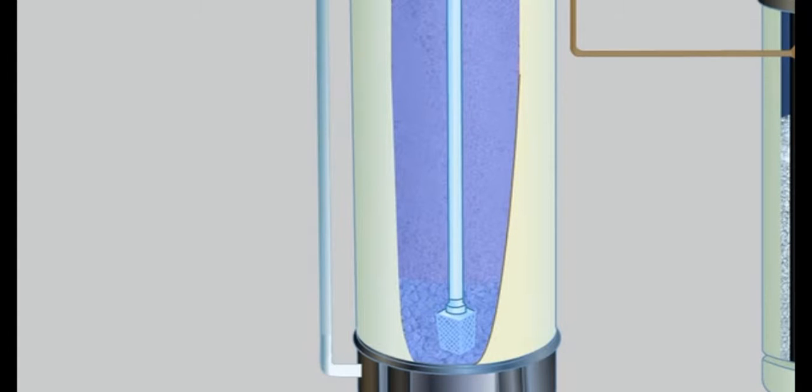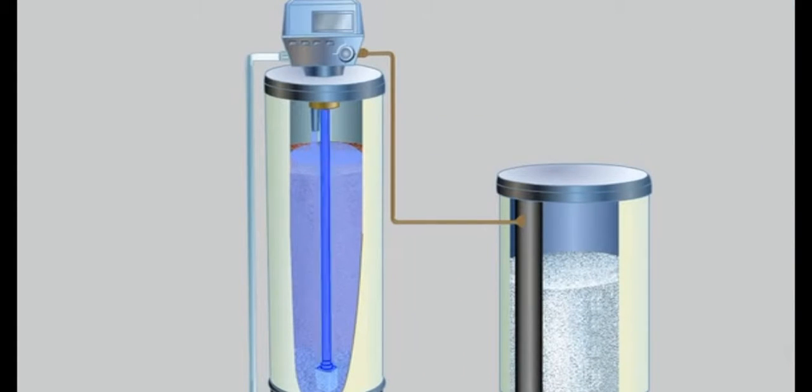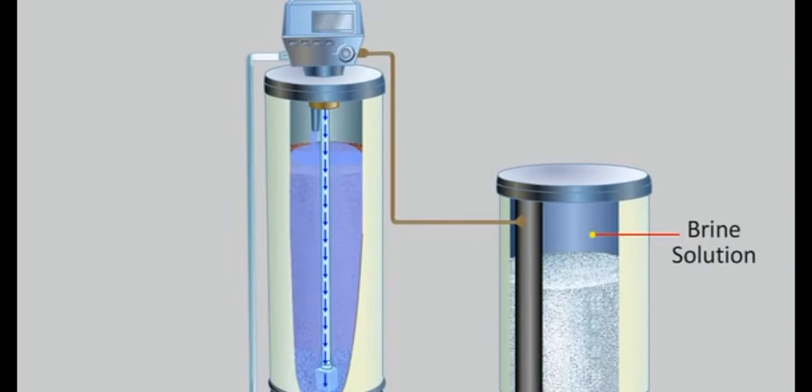The next element is the fill tube, which functions to allow brine solution to enter the tank used for softening hard water and also allows regeneration of brine solution for future use. In the brine solution tank, at the bottom there is a salt tray used during regeneration of brine solution when needed in the process.